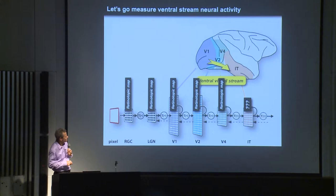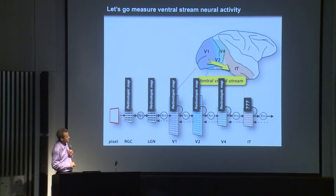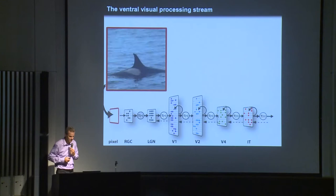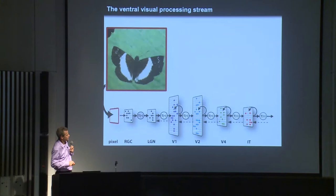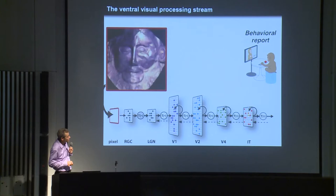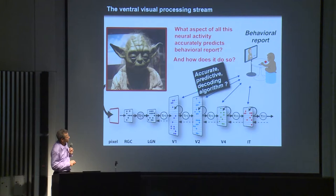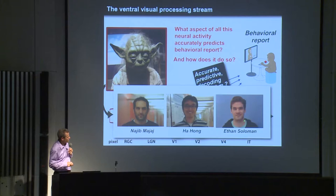As engineers, we think of this ventral visual stream as millions of neurons in each area, with a series of processing stages, intracortical processing, and feedback. There's a complete map of retinal space in all these areas. The key concept is we think of each area as containing a new population representation. When you were watching that RSVP movie, your ventral stream was clicking along — lots of neurons firing in each area. Our goal was to ask: what is the relationship of this neural activity to perceptual report? Can we predict your ability to do those tasks?